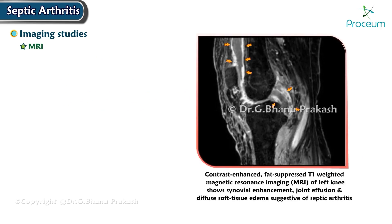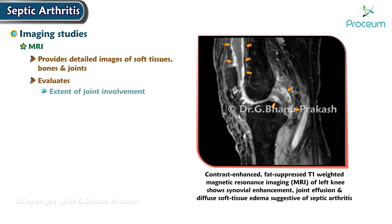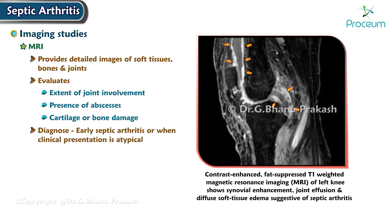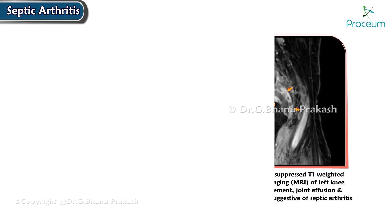Magnetic resonance imaging provides detailed images of soft tissues, bones, and joints, helping evaluate the extent of joint involvement, presence of abscesses, and cartilage or bone damage. MRI is particularly helpful in diagnosing early septic arthritis or when the clinical presentation is atypical.